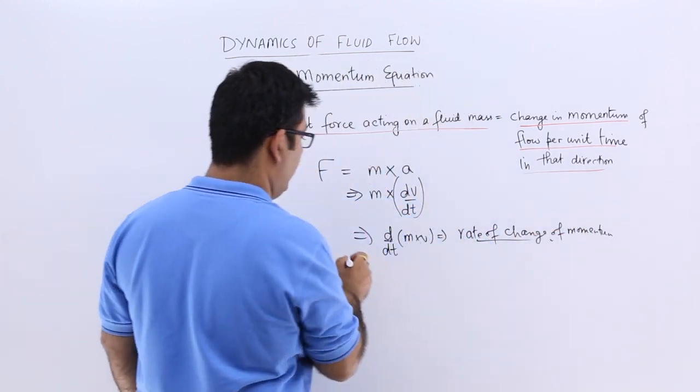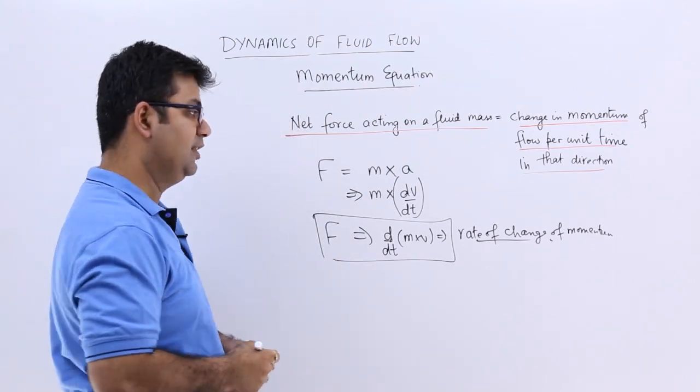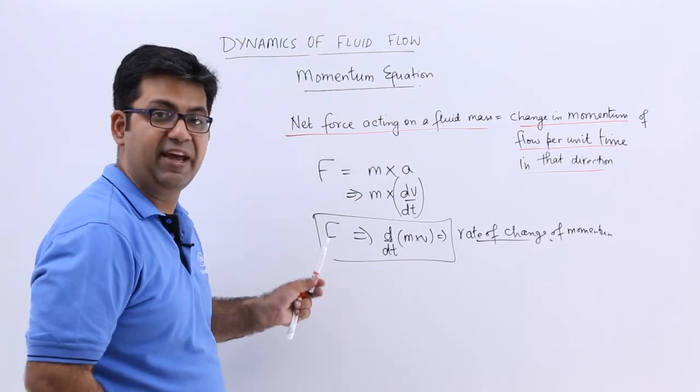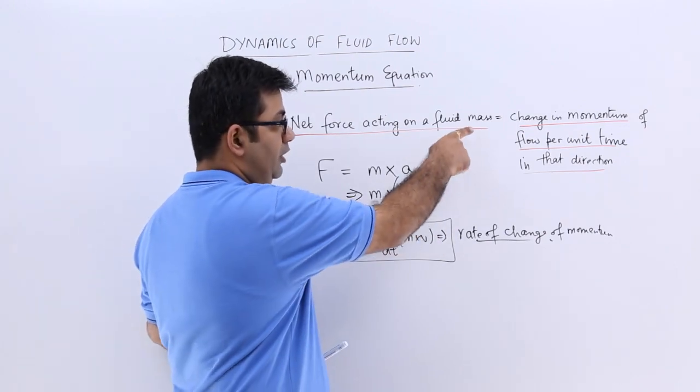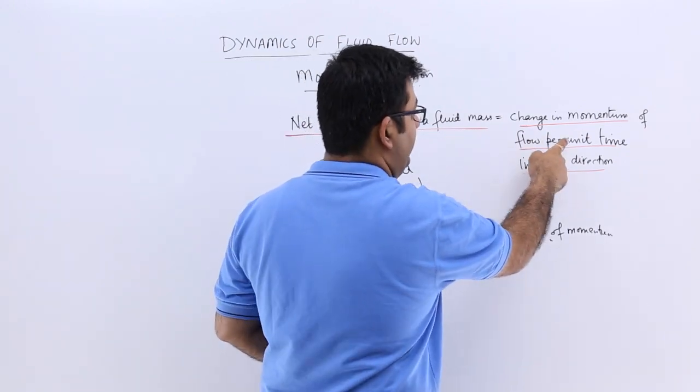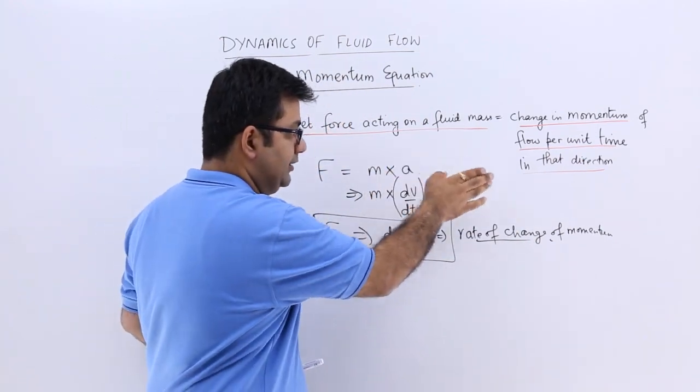So this is what we call the momentum equation, that is, the net force which is F is equal to the rate of change of momentum, that is the change of momentum per unit time in that direction.